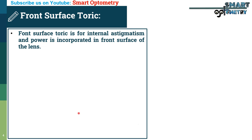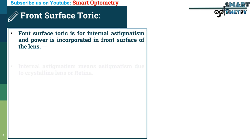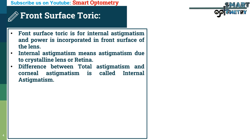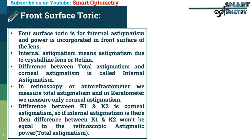Front surface toric is for internal astigmatism, and the power is incorporated in the front surface of the lens. Internal astigmatism means astigmatism due to the crystalline lens or retina. The difference between total astigmatism and corneal astigmatism is called internal astigmatism. In retinoscopy or autorefractometry we measure total astigmatism, and in keratometry we measure only corneal astigmatism. In keratometry, the difference between K1 and K2 is the corneal astigmatism. So if internal astigmatism is present, the difference between K1 and K2 will not equal the retinoscopic astigmatism power, which is the total astigmatism.